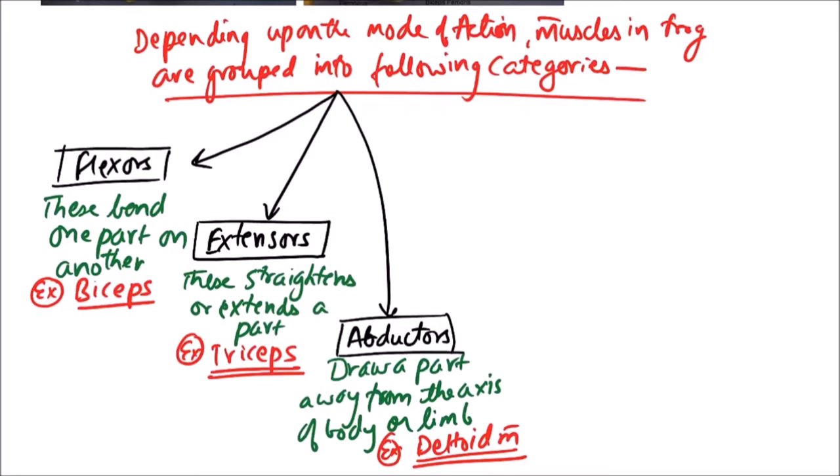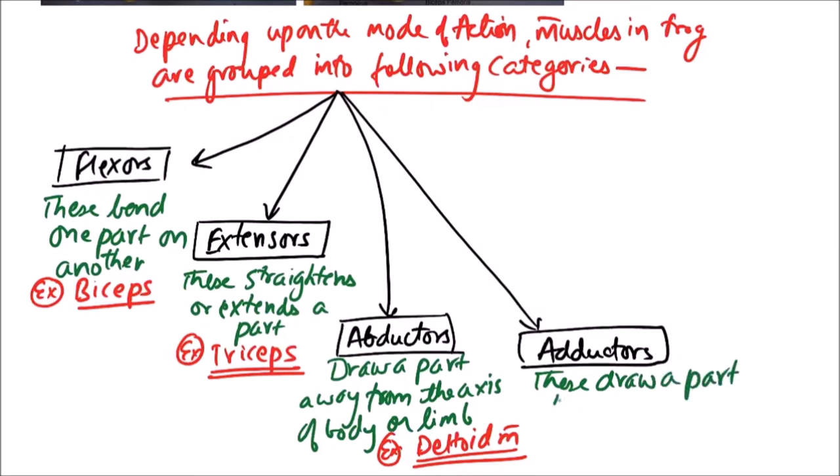Then next is adductors. Adductors perform the function that is antagonistic or opposite to that of abductors. These draw a part towards the axis of body or limb. Example includes latissimus dorsi.